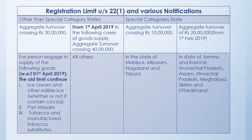The GST has provided various limits and for this purpose has divided the states into two parts: a special category state and states other than the special category. In special category states, the limit is a lesser amount. If your aggregate turnover is crossing 20 lakhs rupees, then registration is compulsory. However, from 1st April 2019, if the turnover is crossing 40 lakhs, then registration is compulsory. But in certain businesses, the 20 lakhs limit is still applicable.